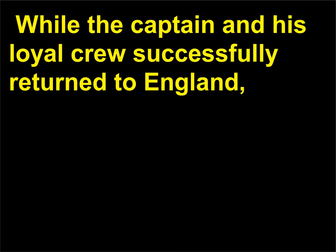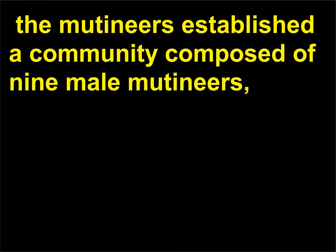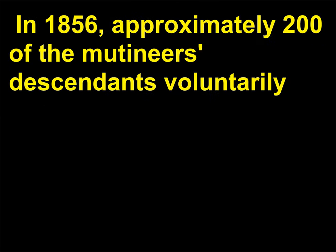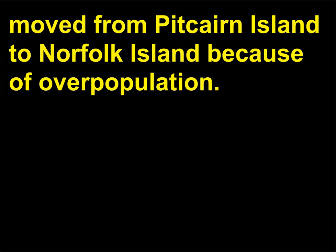While the captain and his loyal crew successfully returned to England, the mutineers established a community composed of nine male mutineers, six male Polynesians, and twelve female Polynesians who had also been on board the Bounty. In 1856, approximately 200 of the mutineers' descendants voluntarily moved from Pitcairn Island to Norfolk Island because of overpopulation.